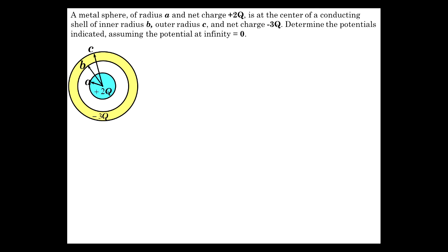Okay, let's do one last example. In this case, a metal sphere in the center surrounded by a conducting shell. The metal sphere in the center has plus 2Q, the shell has minus 3Q. We've got radii a, b, and c.